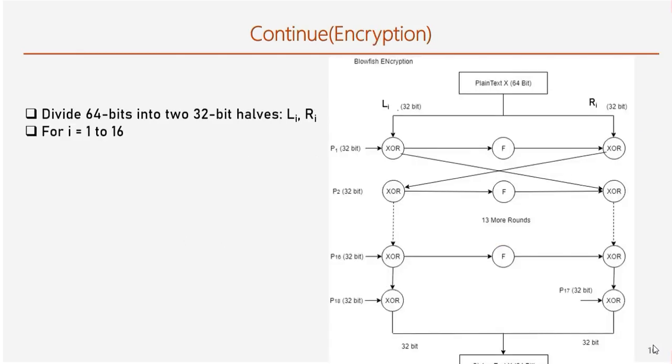So finally we are in the encryption process. Here 64-bit is divided into 32-bit left and 32-bit right half. Here left half L0 is XORed with the sub-key P1 and stored in right R1. The same output goes through F-function and generates mathematically processed 32-bit output which is then XORed with the right half R0. Then the output is stored in left half L1. So we can see for each round we take the swapped output from previous rounds, left and right halves.